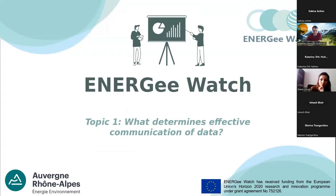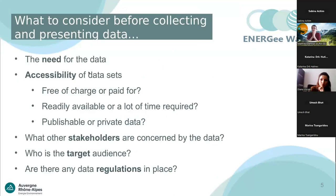The first topic is: what determines effective communication of data? There are several steps. First, we need to identify the need for data. For example, if we are talking about energy-related data, we need the consumption of the industrial sector because we want to launch projects about heat use. We then need to find any available dataset we can access — some are free of charge, some must be paid for, some are public or private.